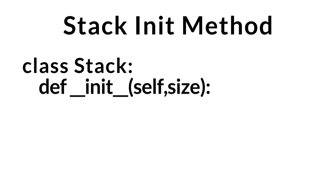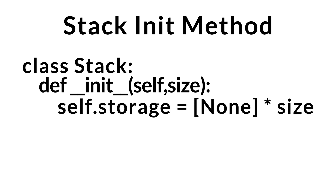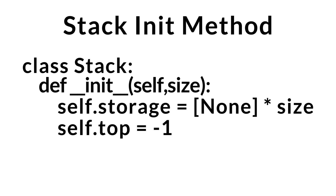Let's go over our stack init method. It has two parameters, the size parameter being the size of the stack that we want to create. First, we need a place to store our data, and we'll be using an array. Since we're adding to or removing from the top of the stack, we'll need to keep track of the index of the top element. So we'll initialize top to minus one since our stack is currently empty.